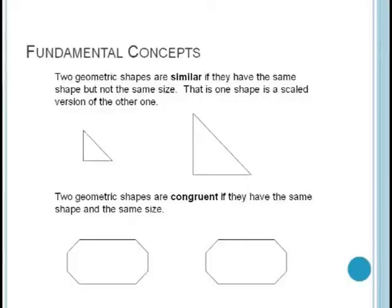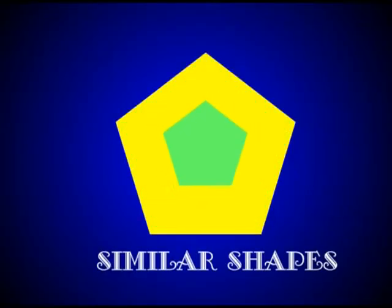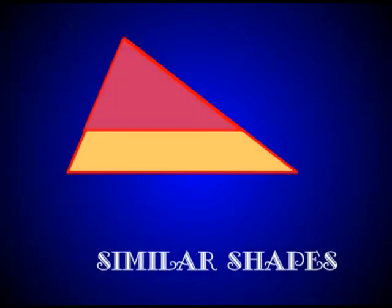Let's start with the general concepts. What do we mean by similar and congruent? Two geometric objects are similar if they have the same shape, but not necessarily the same size. In other words, one object is a zoomed in or scaled version of the other.